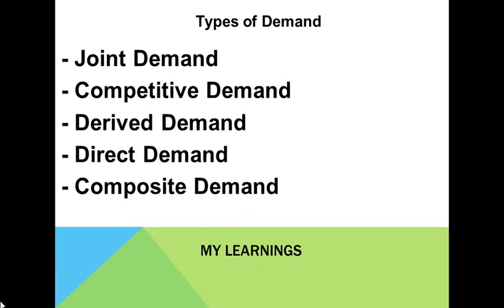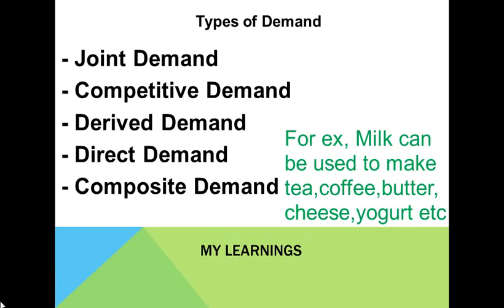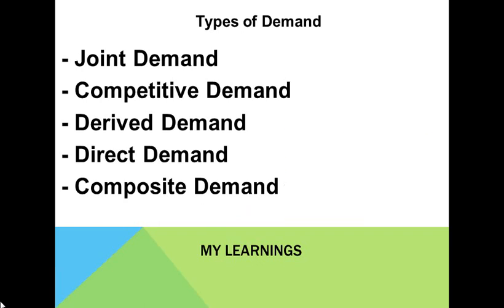Composite demand refers to demand of products which have multiple uses. For example, electricity, milk, etc. These products have multiple usages and can be used for a variety of purposes.